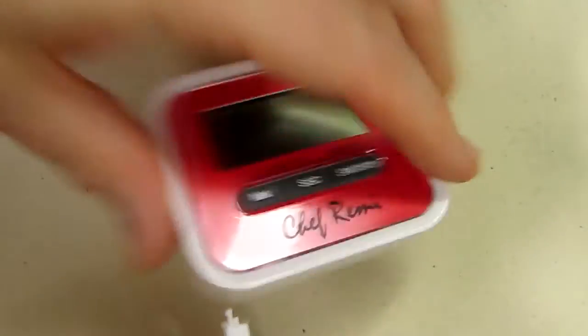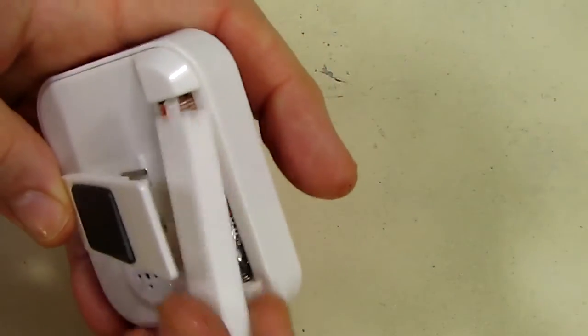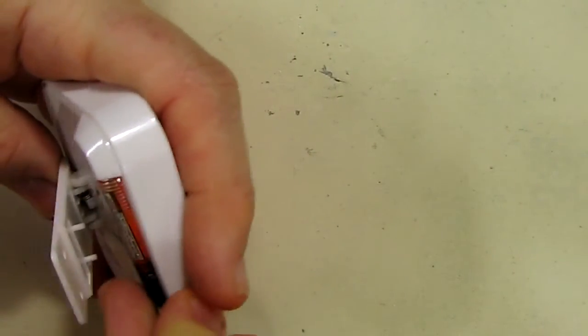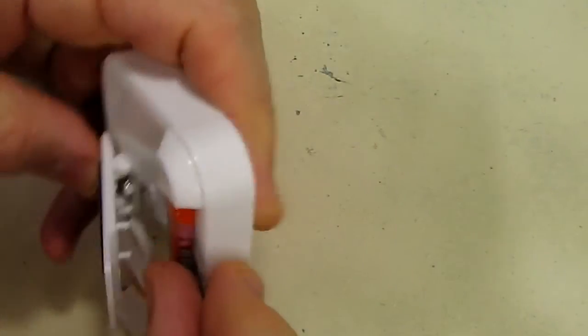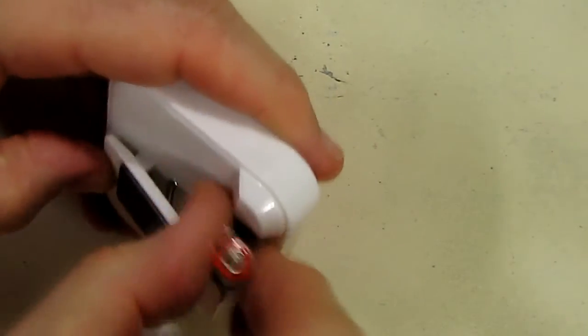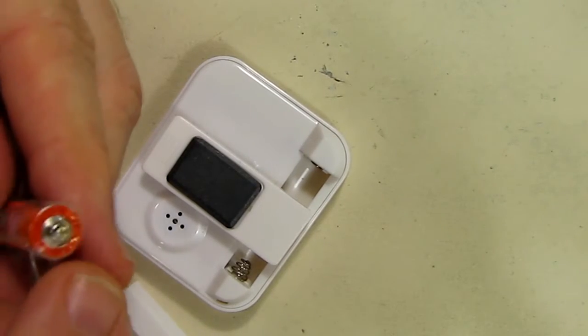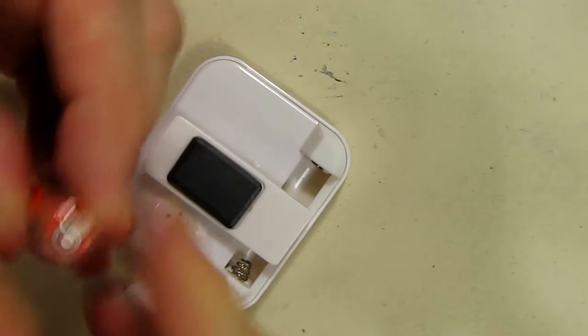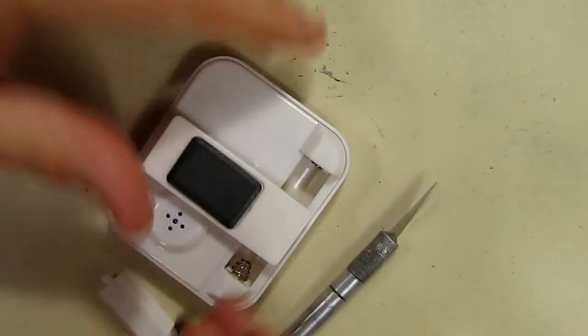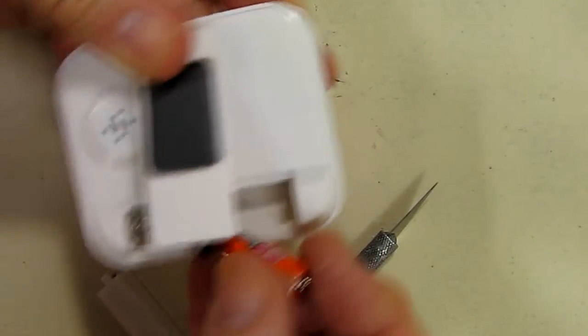First thing you want to do is slide off the cover on the battery compartment right there. There's an included battery, and the battery has plastic on there, so you want to take the positive lead off and cut that plastic off so the battery can make a connection into the timer.